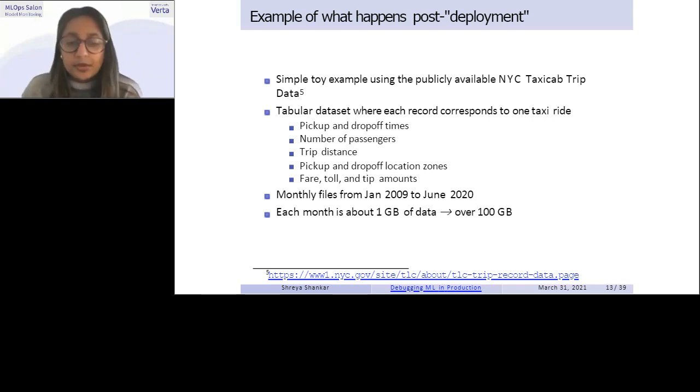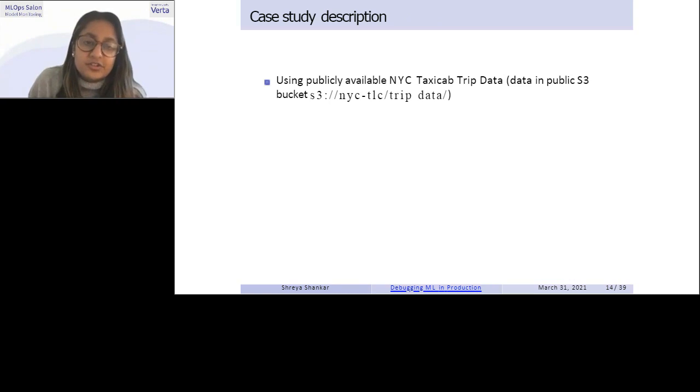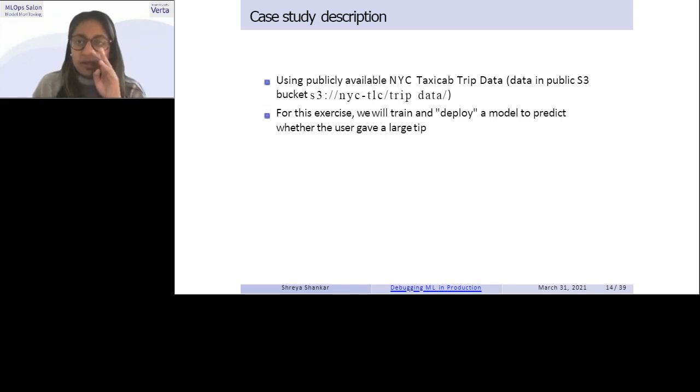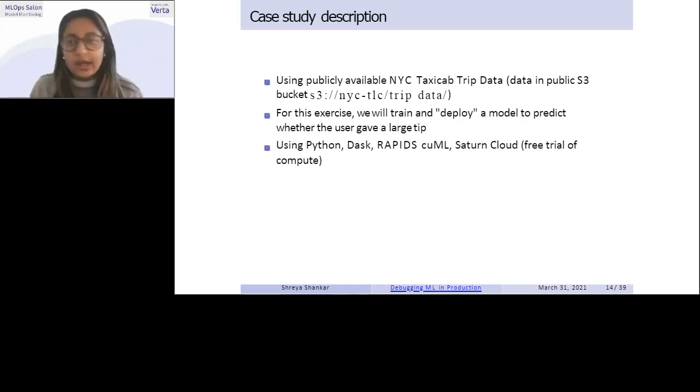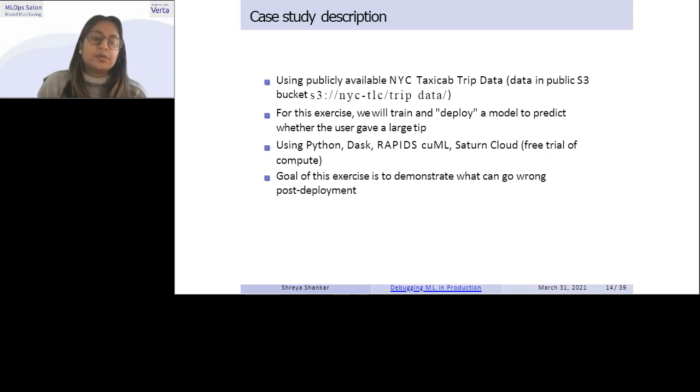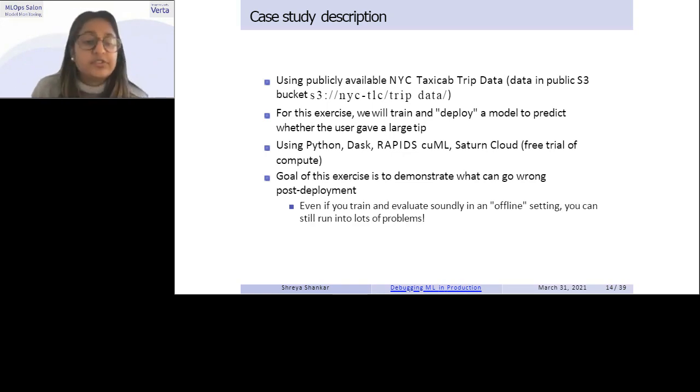I think the best, one of the closest real world examples that I've seen, working with data, like larger than your computer scale. So for this exercise, we will train and like simulate the deployment of a model to predict whether the user gave a large tip or not for that ride. And I define a large tip as like 20% of the fare total, super arbitrary. But I'm sure you can change that if you wanted. I use Python, Dask, and some other tools. And the goal of this exercise really is to demonstrate what can go wrong, quote unquote post-appointment. Even if you train and evaluate soundly in the offline setting, as we will do here, you can still run into lots of problems.